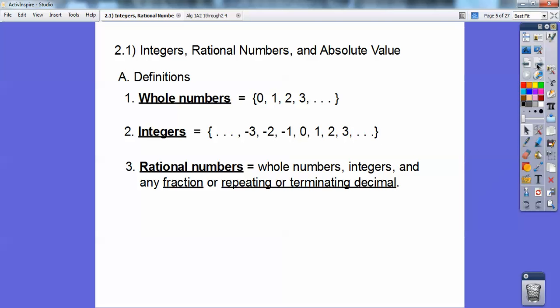Rational numbers equal the whole numbers, the integers, and any fraction, and it has to be a repeating or a terminating decimal.